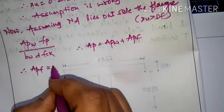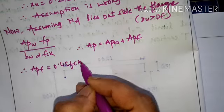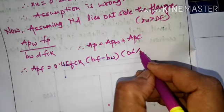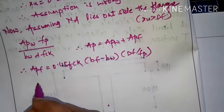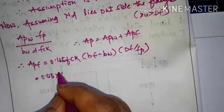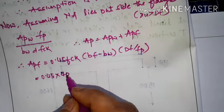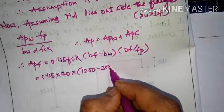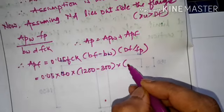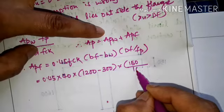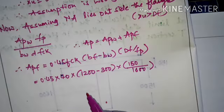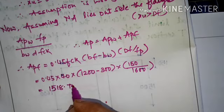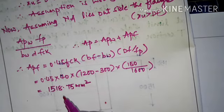APF = 0.45 × 40 × (1200 − 300) × 150 / 1600 = 1518.75 mm². Therefore APW = AP − APF = 4700 − 1518.75 = 3181.25 mm².